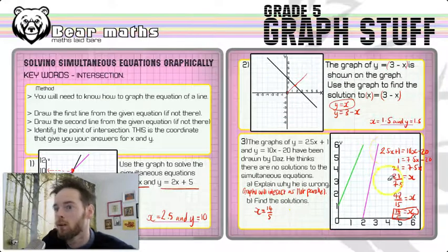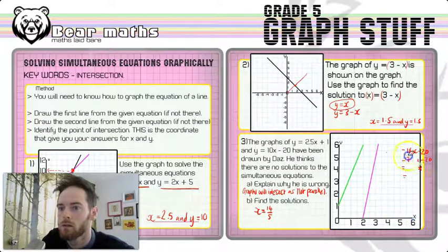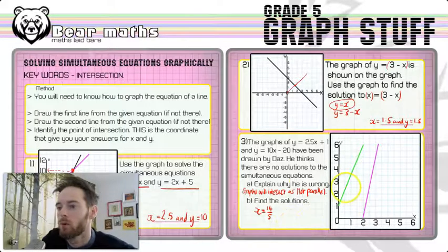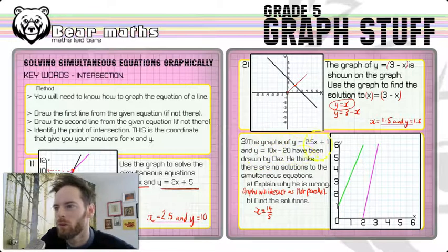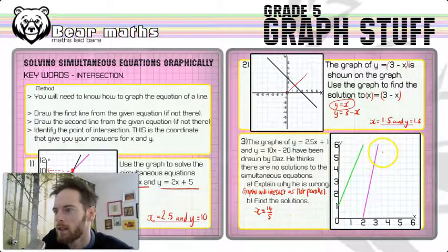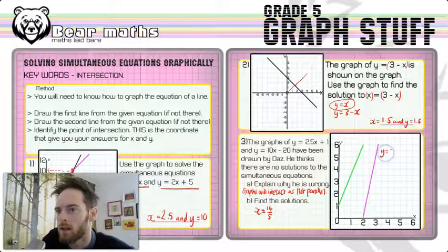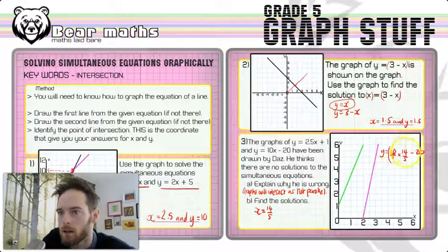And I'm going to get rid of all that so I can do the y solution. Because you always need an x and a y solution, as we've done in the other questions. So let's substitute that value of 14 fifths into the one with the whole number. I don't want to do it in the one with the decimal. That's going to be awkward because we've got a fraction already. So 10 times by 14 fifths. So y equals 10 over 1. I always put the whole number over 1 if it's a whole number multiplied by a fraction. So multiply by 14 over 5 minus 20. So let's do this bit here. I'm putting it in brackets.